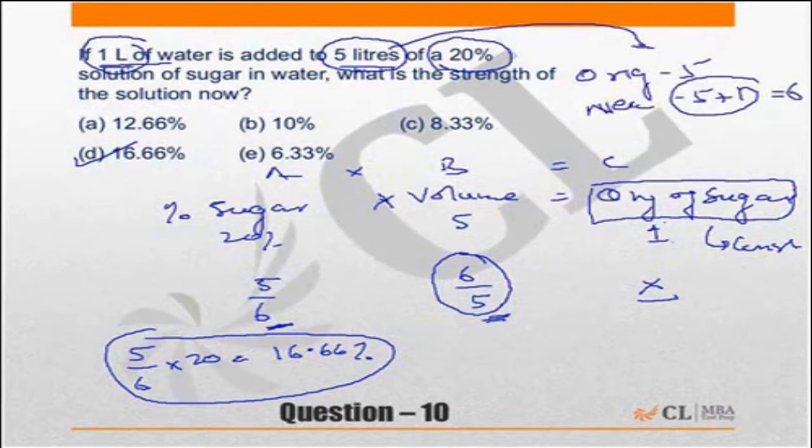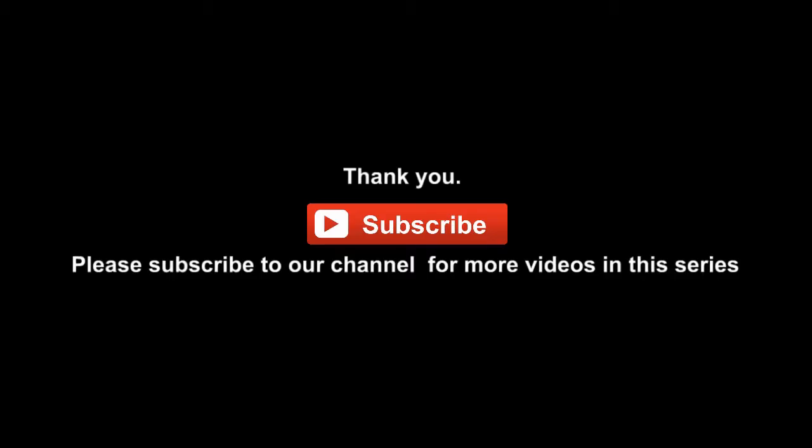So the volume of the mixture becomes 6 by 5 times. Hence, the percentage of sugar should become 5 by 6 times. I hope that explains how the volume became 6 by 5 times. Thank you.